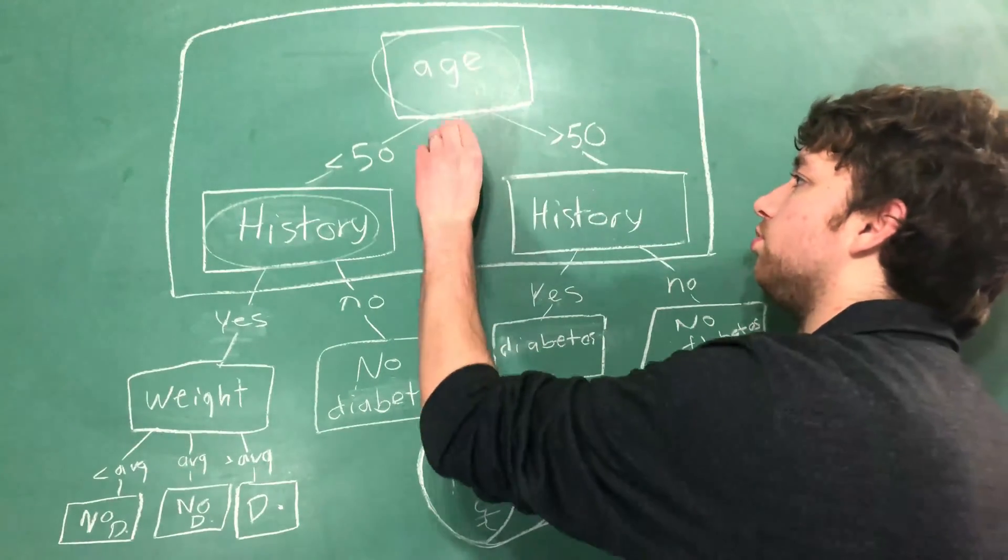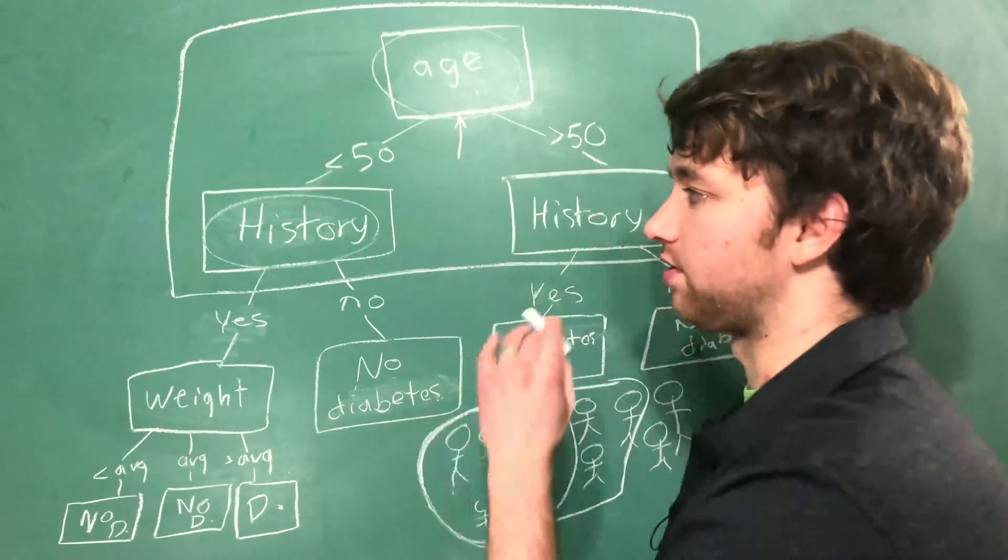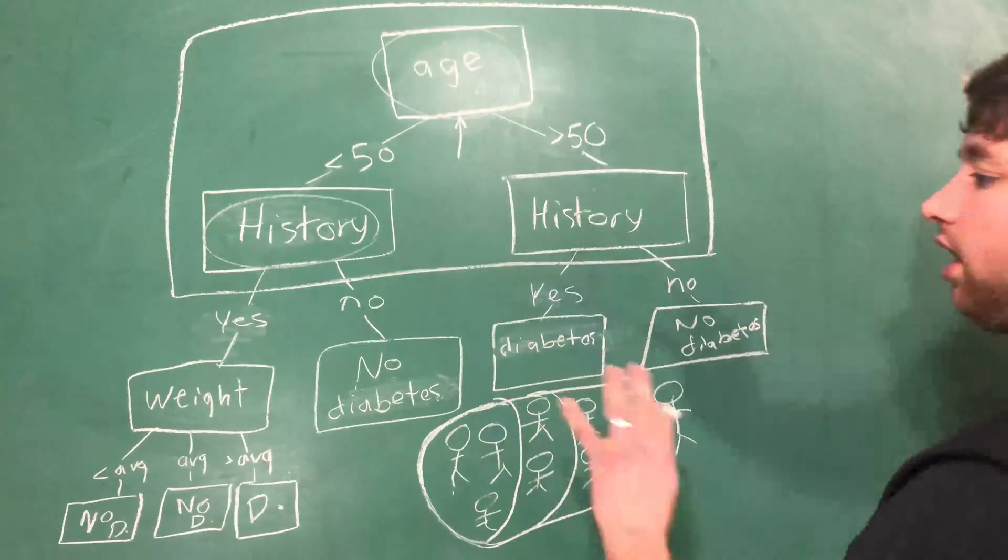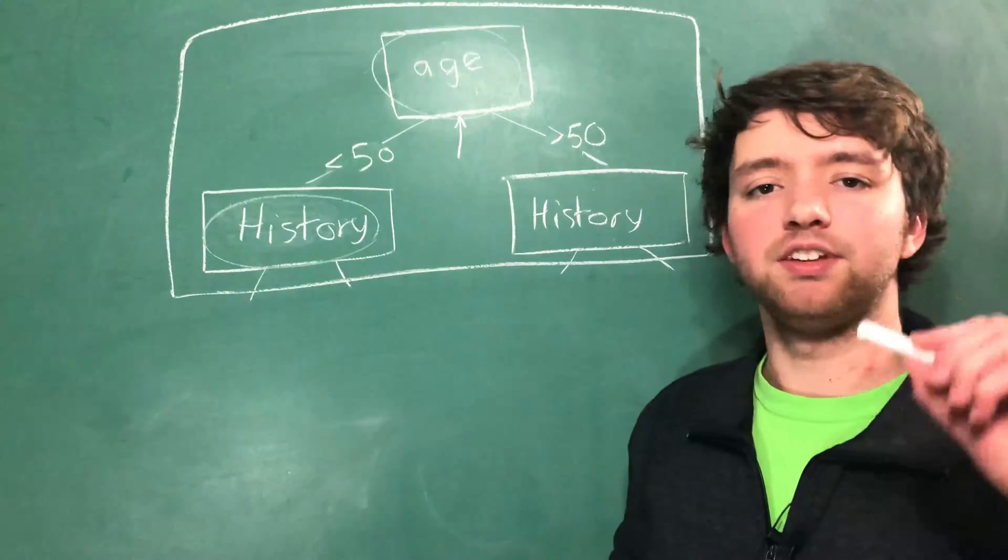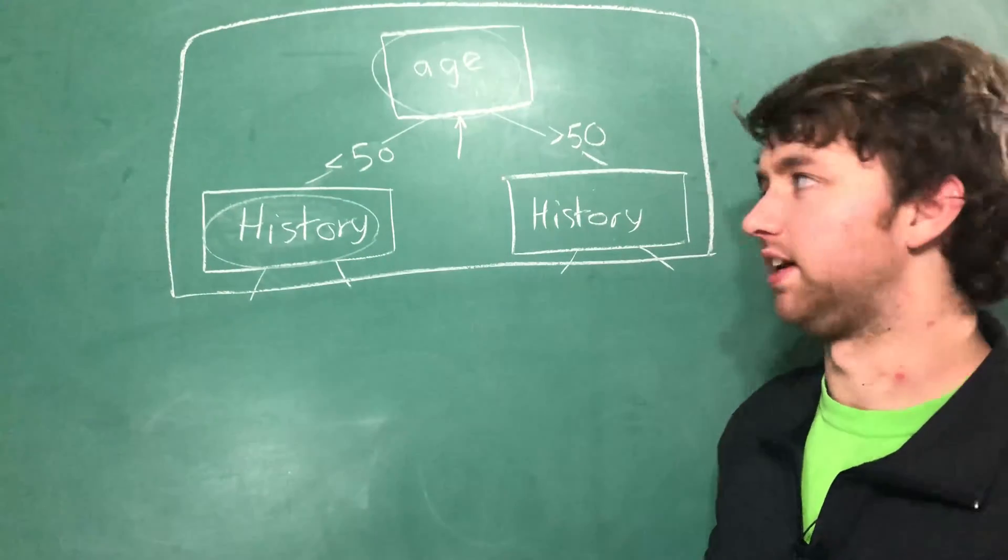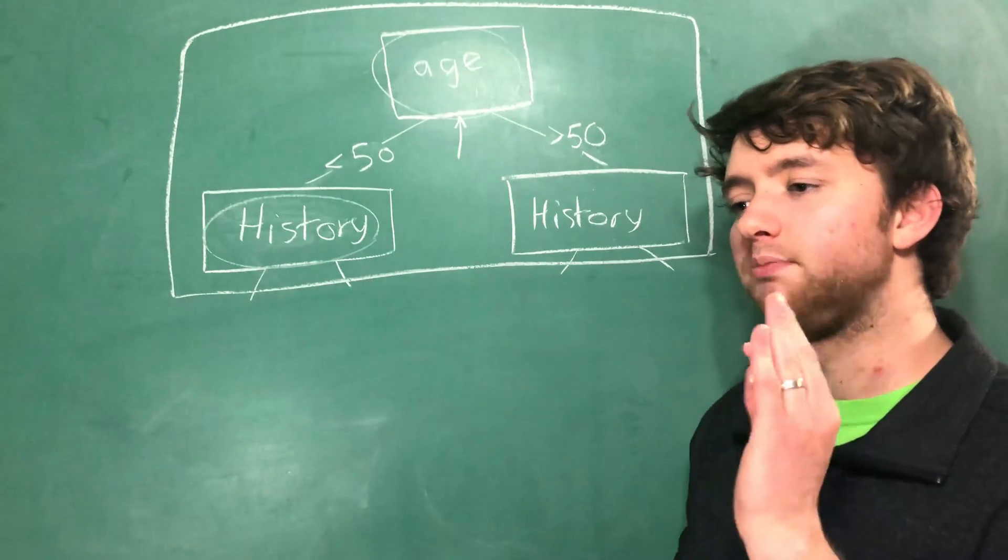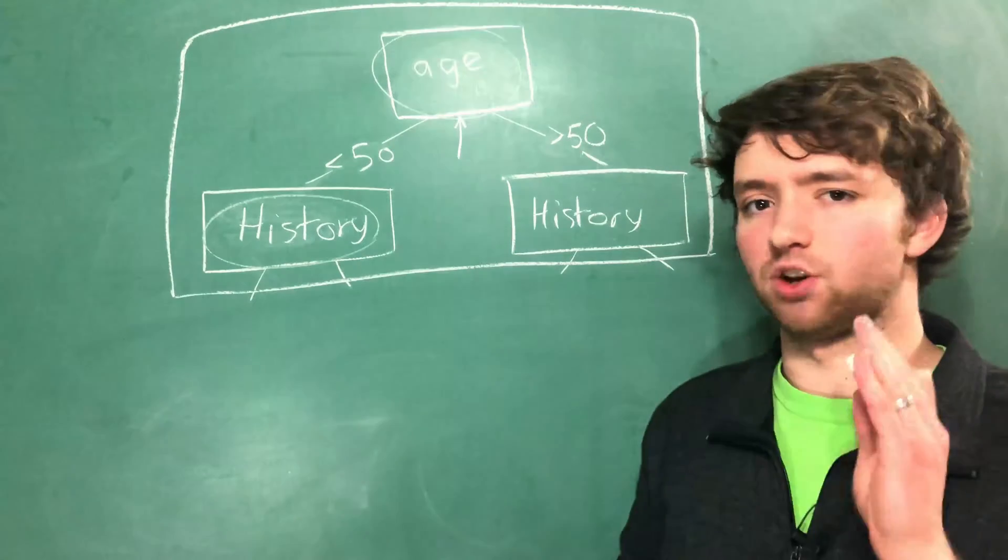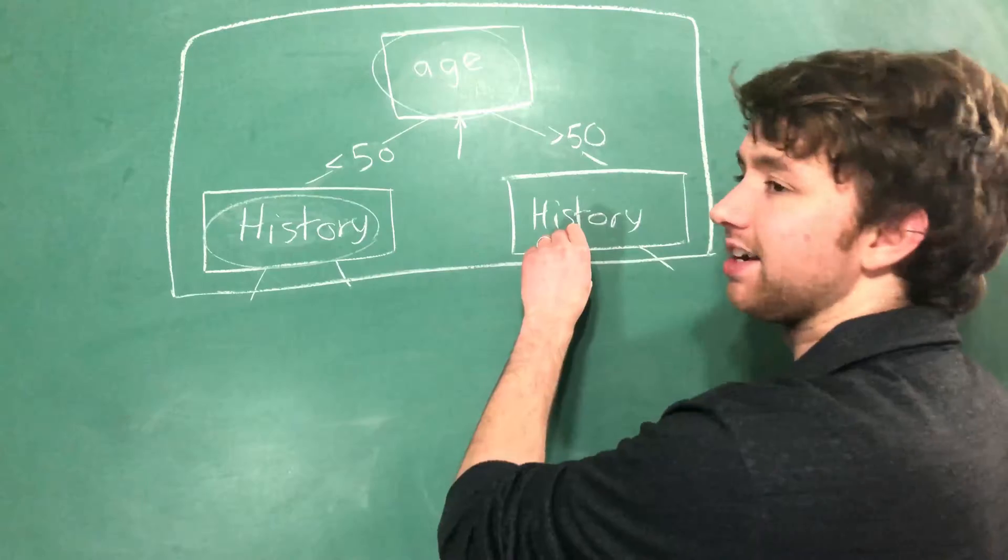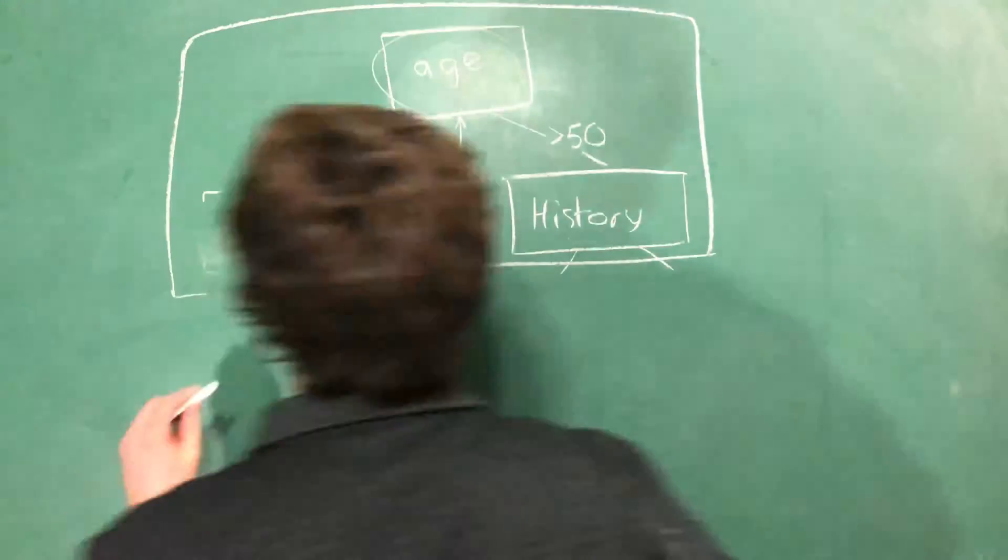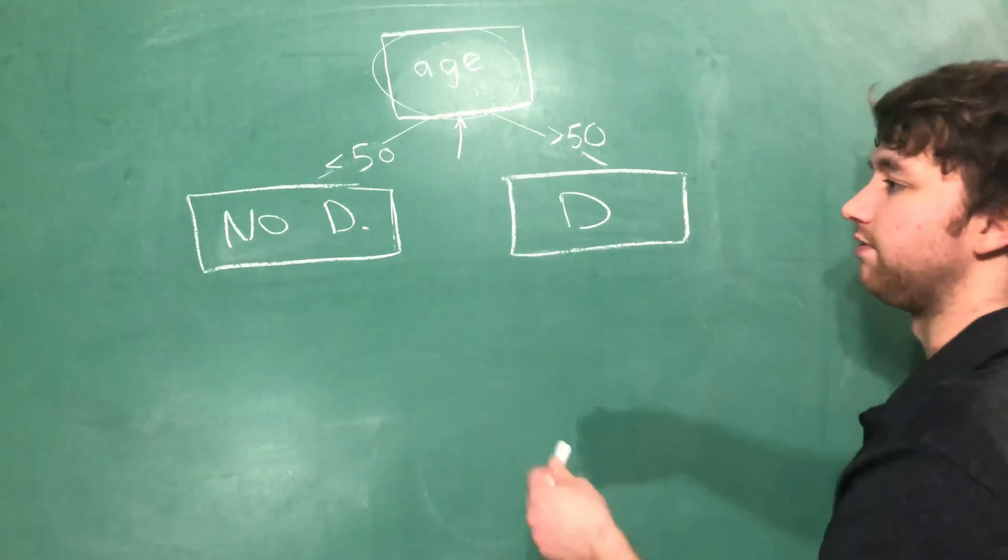Let's figure this out. How do we choose which attribute to put here to split our data? Why did we put age first and not weight? I'm going to erase this down here. Let's say anyone under 50 in the past has always been diabetes free. Anyone over 50 has always had diabetes. Well then we don't even need to use these next questions. We can just replace those with no diabetes and diabetes. So we've jumped to the leaf nodes right away.